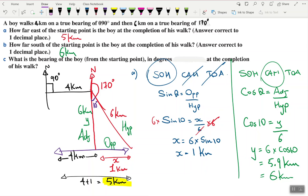Remember he ended up over here, so that's where the boy is at the end. He started off over there. We'll draw a straight line there. When the question is saying what is the bearing of the boy, we basically need that bit there.